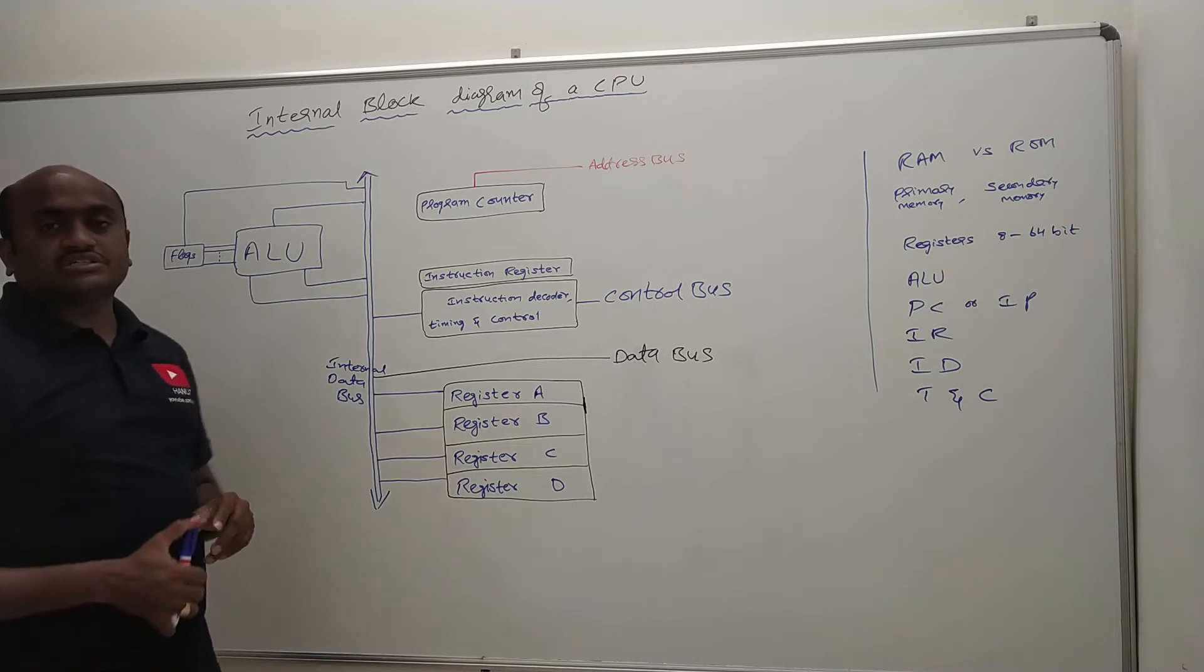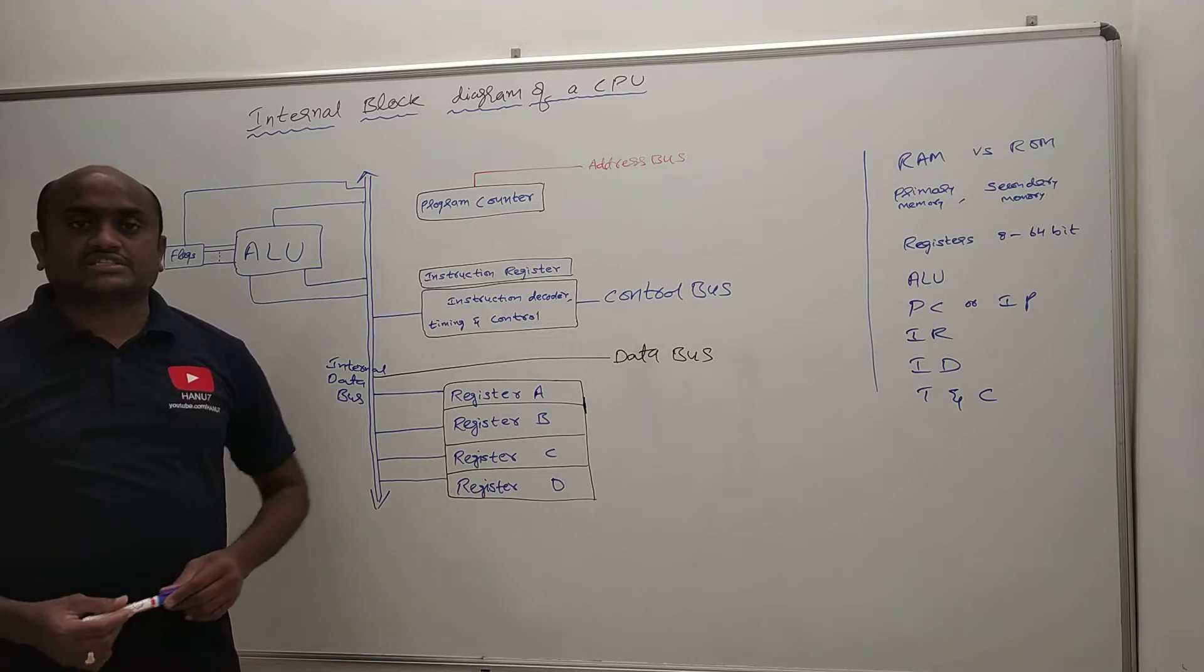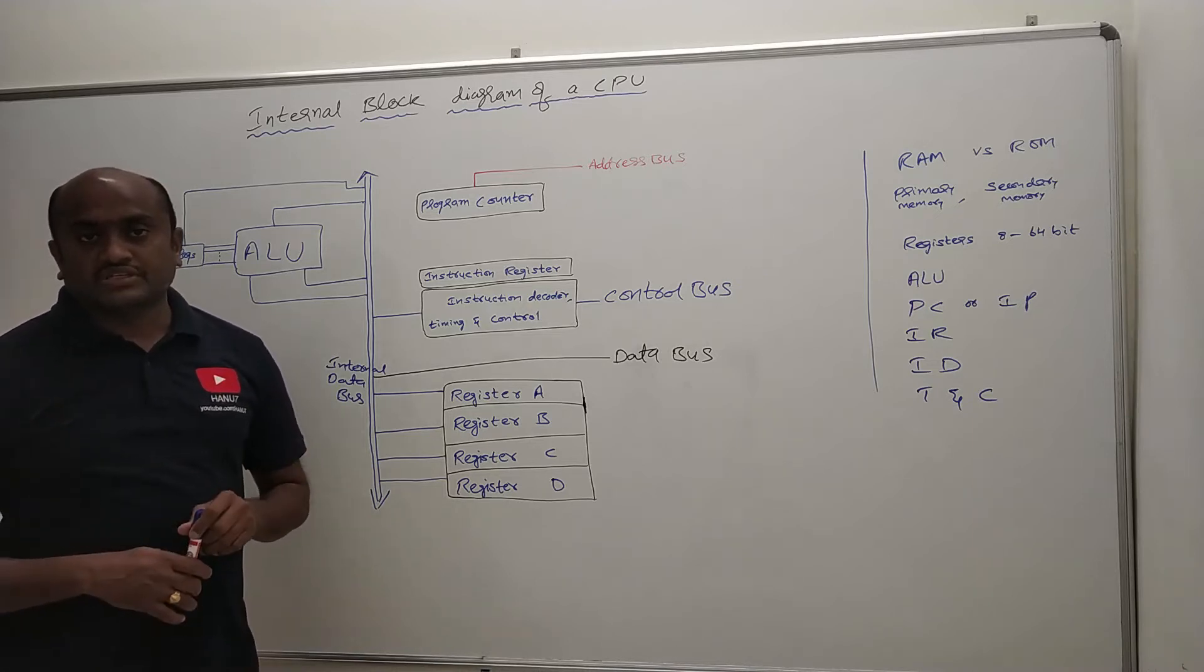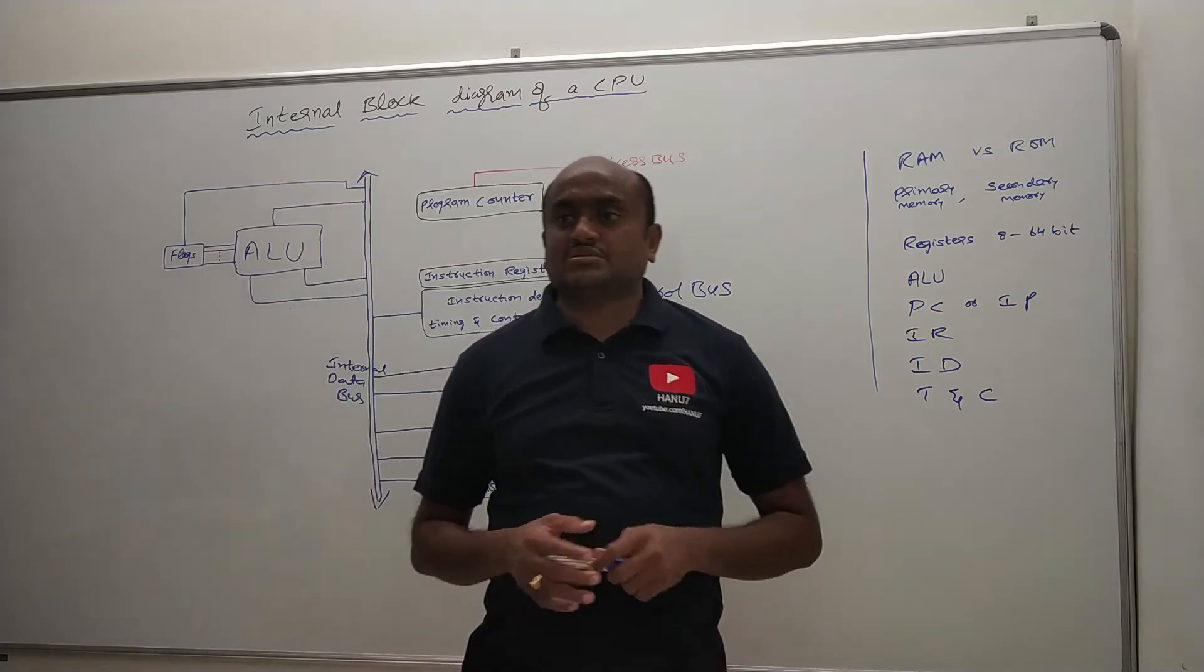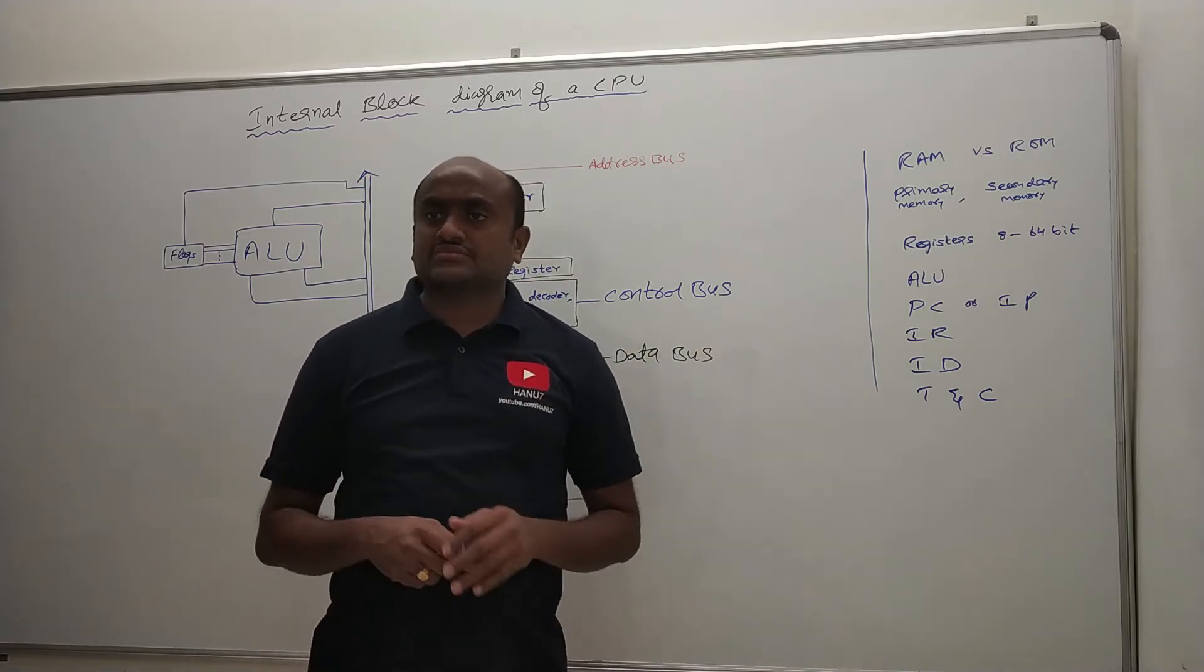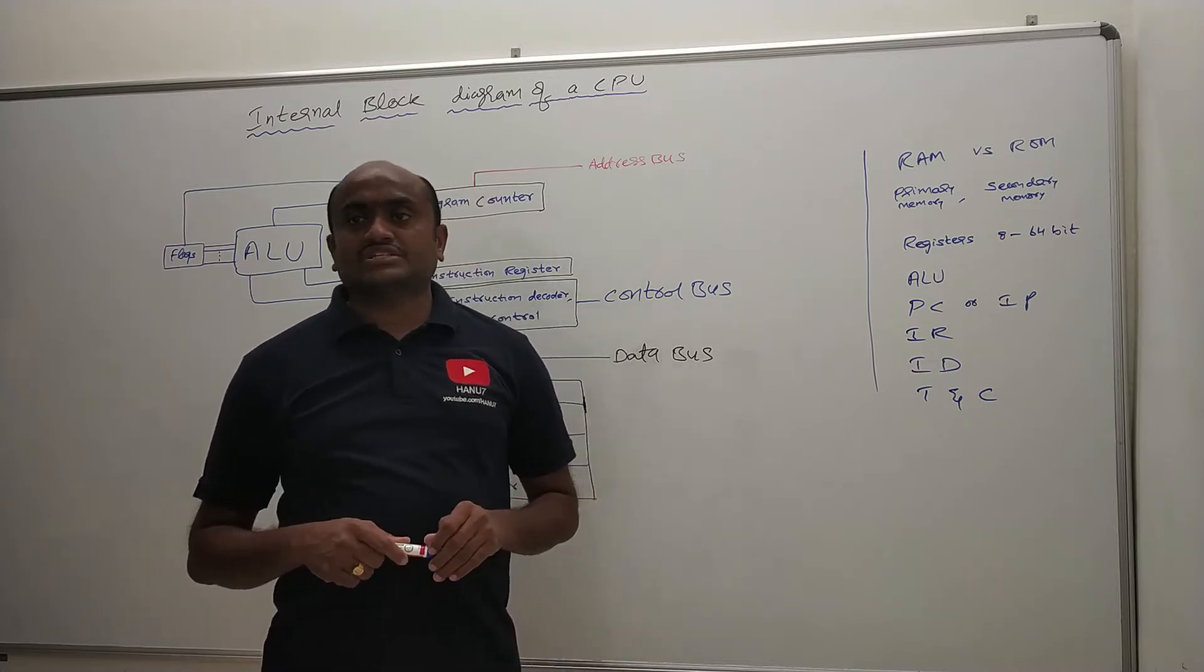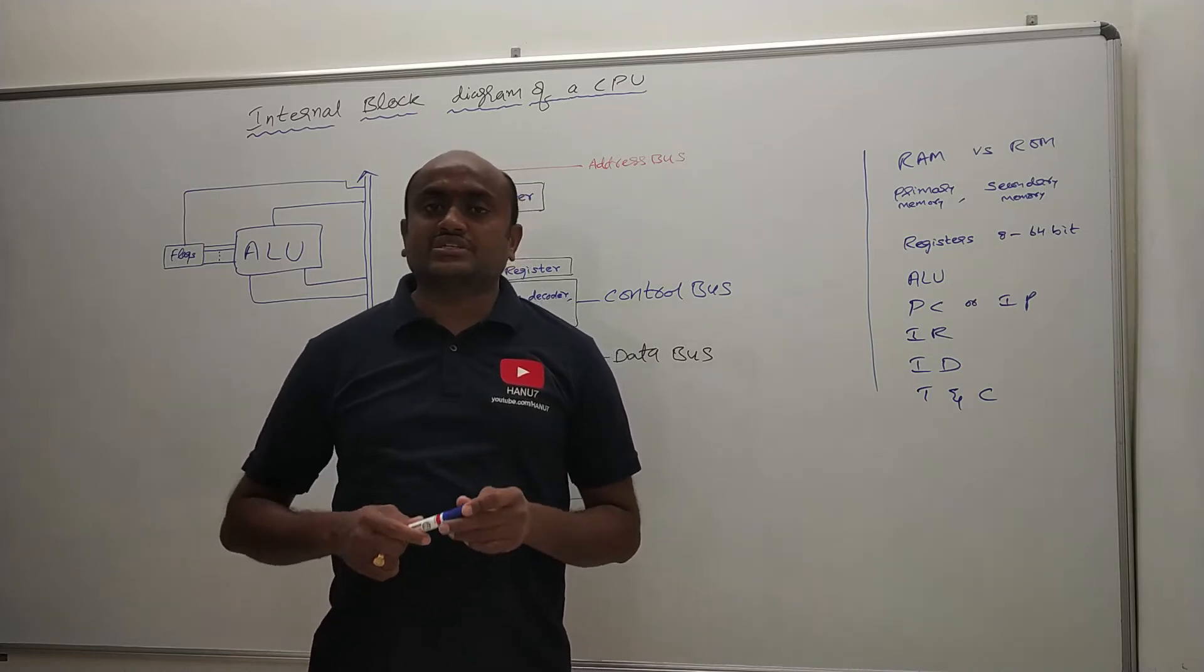So first let us start with RAM and ROM. RAM we already know it is random access memory, ROM is read only memory. So what is the use of these two RAM and ROM, and what do you mean by primary memory and what do you mean by secondary memory? So we have seen in the last session your CPU is connected with RAM, ROM, and disk. Disk memories are said to be secondary memories. This RAM and ROM are said to be primary memories.